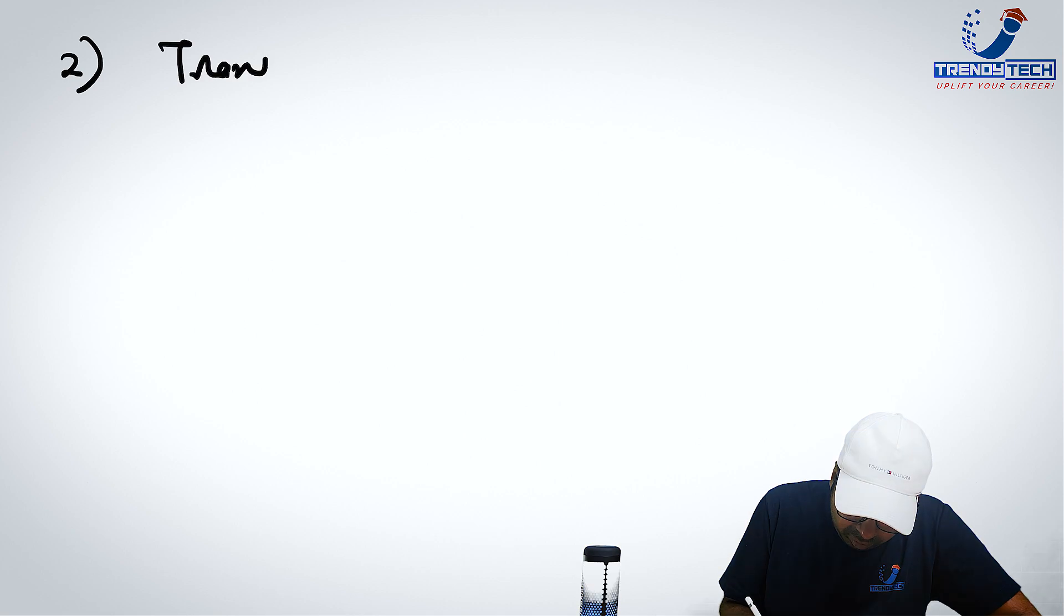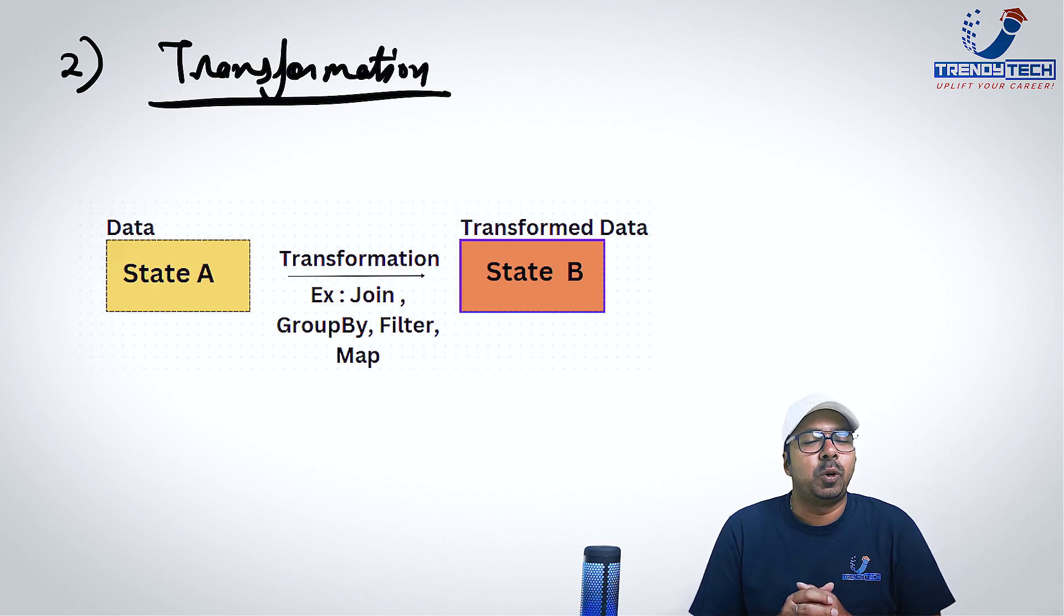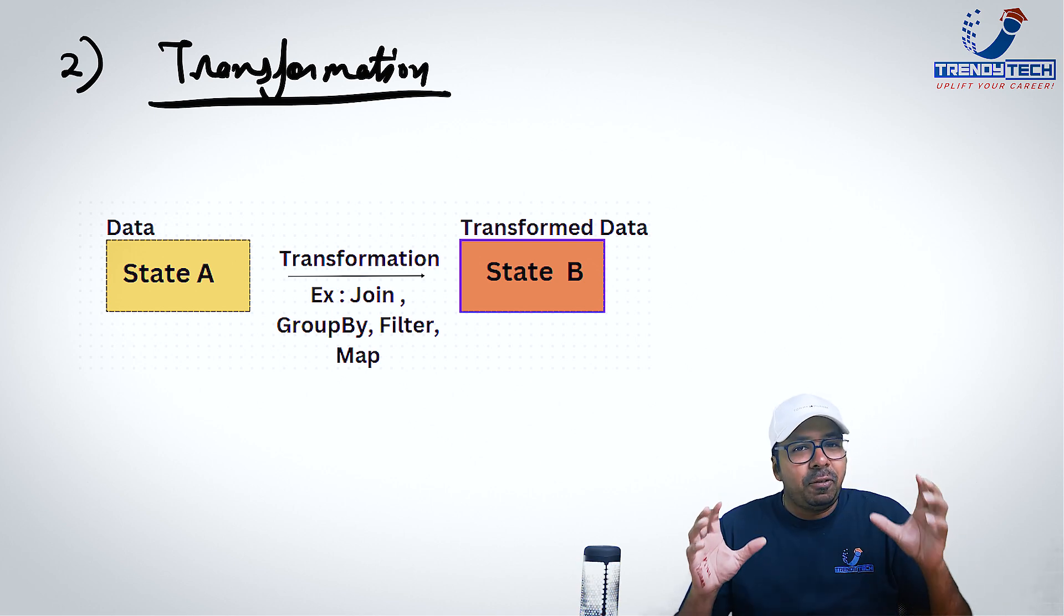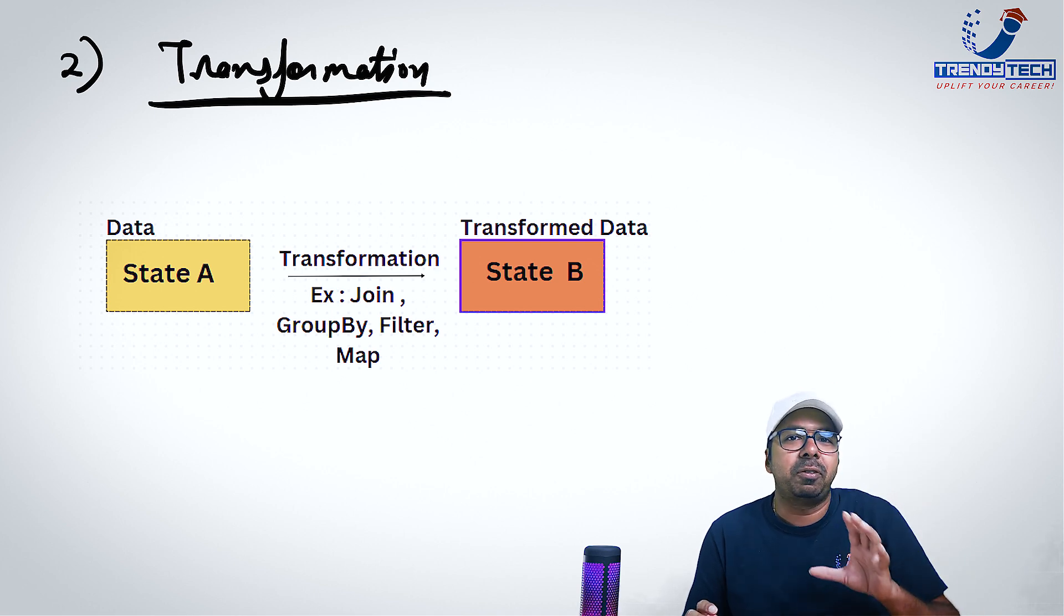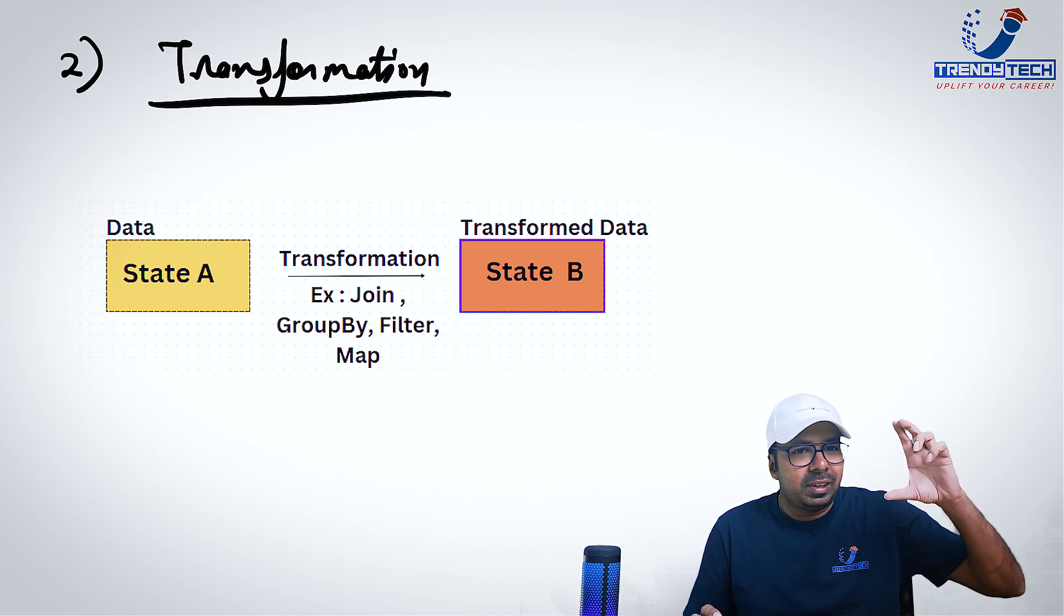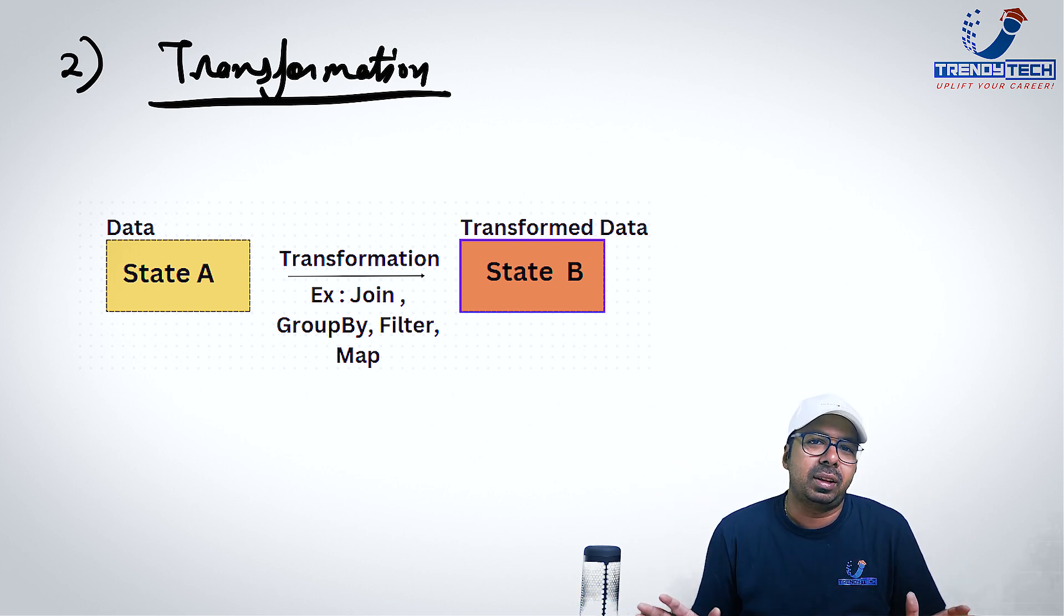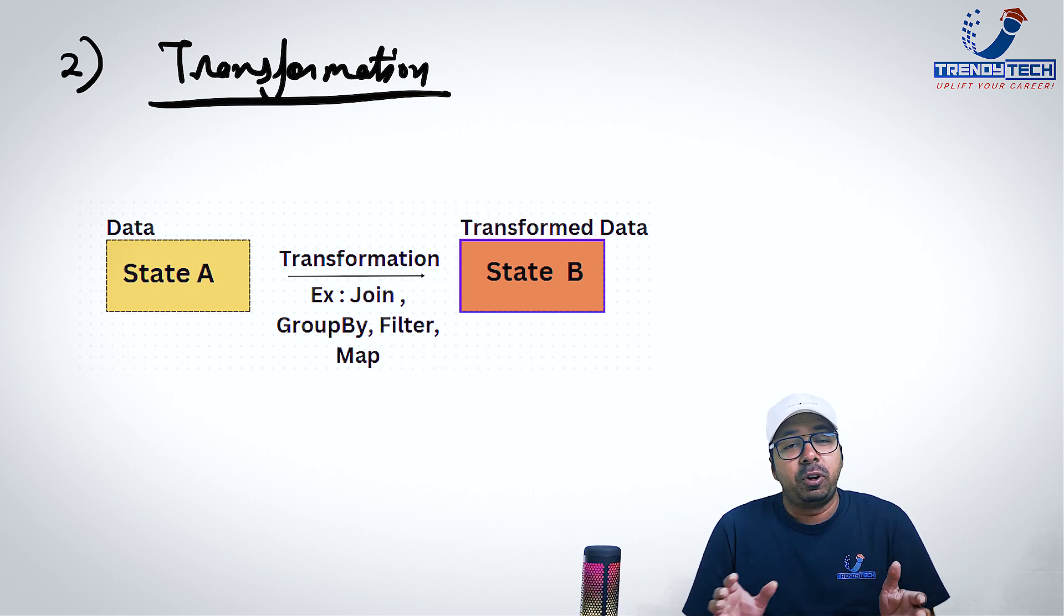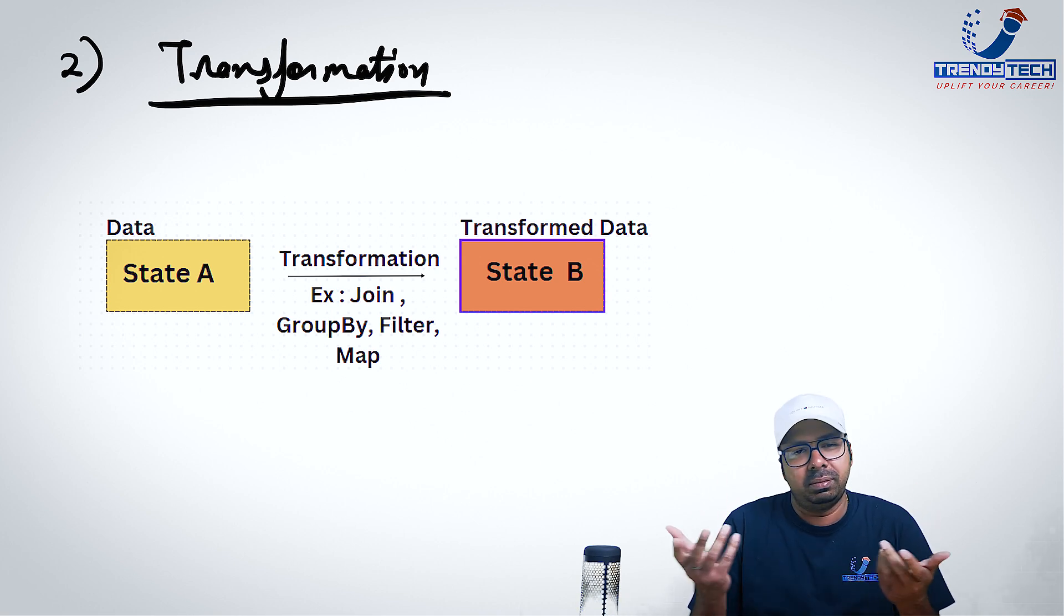Now let's talk about what is a transformation. So if you would have worked on Apache Spark, definitely you would know what is a transformation. Transformation is something which takes the data from one form and converts it to another form. That means from state A, it converts your data into state B. As simple as that. That means if you are doing a filter, that's a transformation. If you are doing a map, that's a transformation. If you are doing a group by, that's a transformation. Join, it's a transformation.